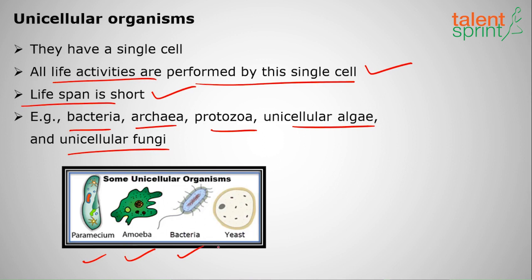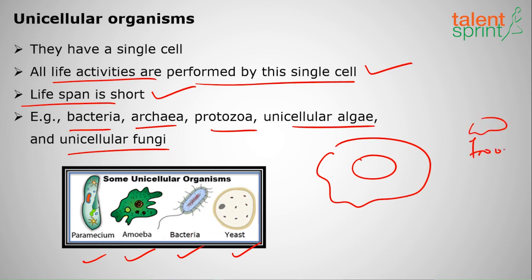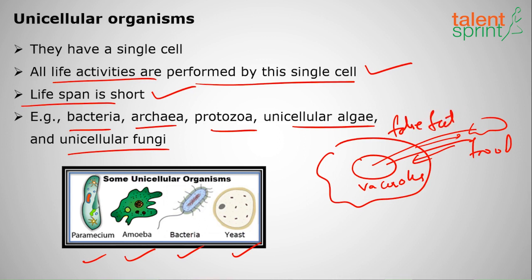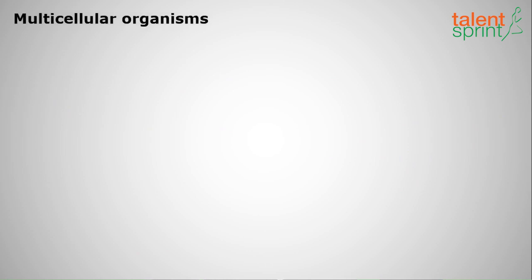You can see the diagram showing amoeba, paramecium, bacteria, and yeast. If we take amoeba, it has only a single cell. To capture food, it uses false feet — pseudopods — to grab the food and bring it back into vacuoles for storage. This temporary use of false feet to capture and store food is a key feature. Amoeba is the best example of a unicellular organism, along with paramecium, bacteria, and yeast.